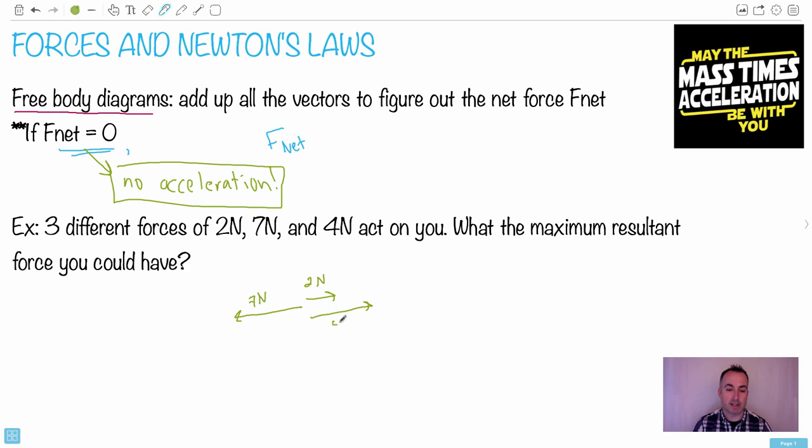If that was the case, I would have two plus four. They're both in sort of one direction. So that gives me six in one direction. I have seven in the other direction. So seven minus six. I end up with a result of one newton that way in this case, or one newton to the right.